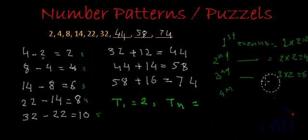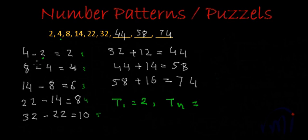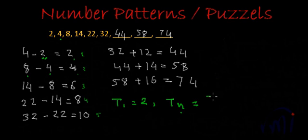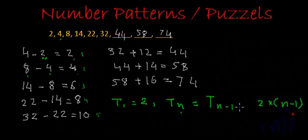Now can you tell me how to write the nth term? When we are finding the second term, we are adding the first even number to the first term. And when finding the third term, we are adding the second even number to the second term. So when we find the nth term, we add the (n-1)th even number to the (n-1)th term. The (n-1)th even number will be 2 multiplied by (n-1), and we add it to the (n-1)th term to get the nth term.